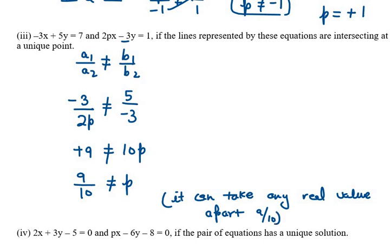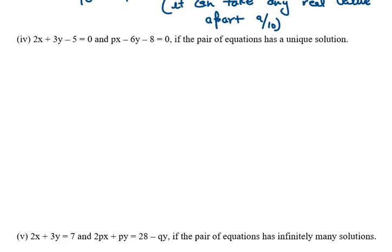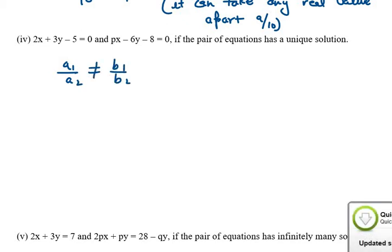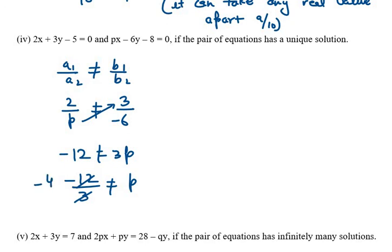Moving on to part 4. It says 2x plus 3y minus 5 equals 0 and px minus 6y minus 8 equals 0, again with a unique solution. The condition is a1 over a2 not equal to b1 over b2. A1 is 2, a2 is P, b1 is 3, b2 is minus 6. Using cross multiplication we get minus 12 not equal to 3p, so P is not equal to minus 4. It can take any other real value for a unique solution.